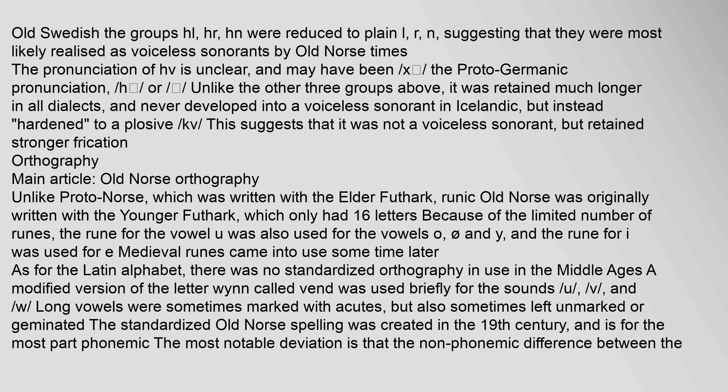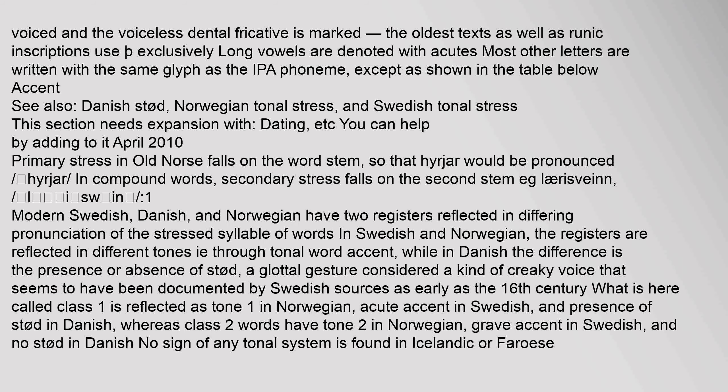Unlike Proto-Norse, which was written with the elder Futhark, runic Old Norse was originally written with the younger Futhark, which only had 16 letters. Because of the limited number of runes, the rune for the vowel U was also used for the vowels O and Y, and the rune for I was used for E. Medieval runes came into use some time later. As for the Latin alphabet, there was no standardized orthography in use in the Middle Ages. The standardized Old Norse spelling was created in the 19th century and is for the most part phonemic. The oldest texts as well as runic inscriptions use exclusively long vowels denoted with acutes.